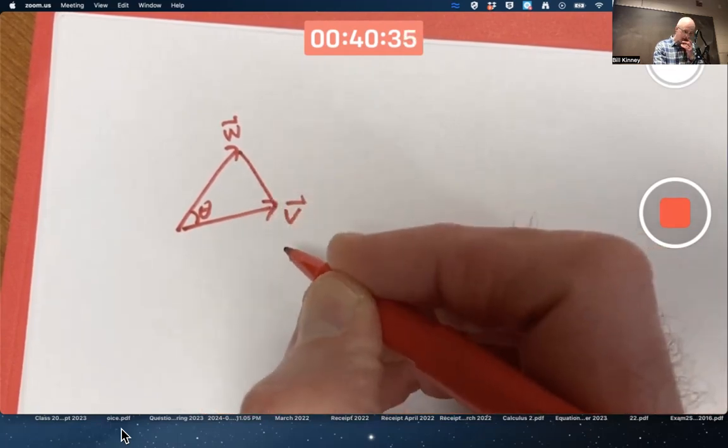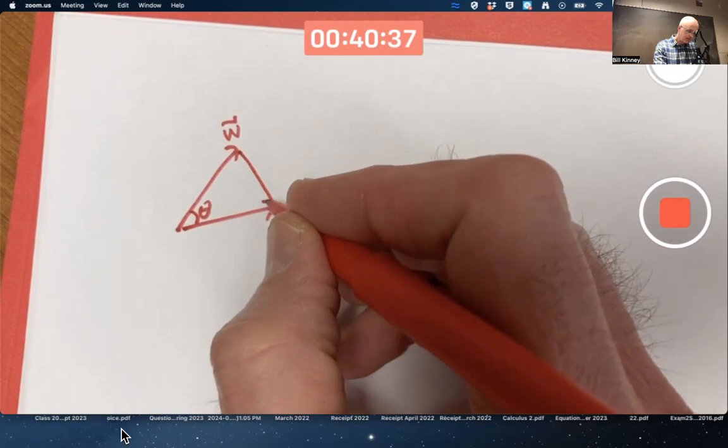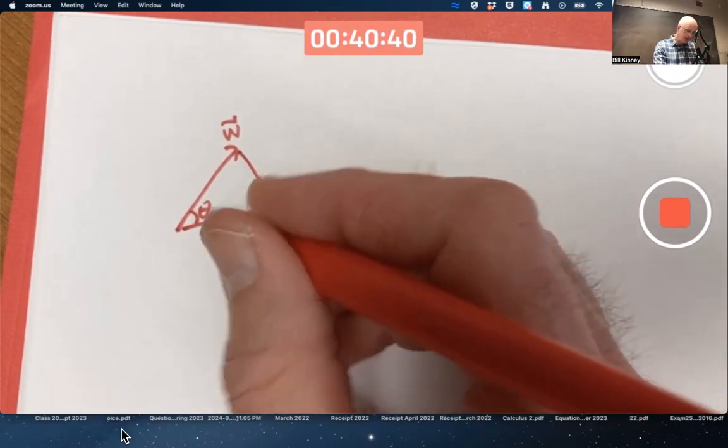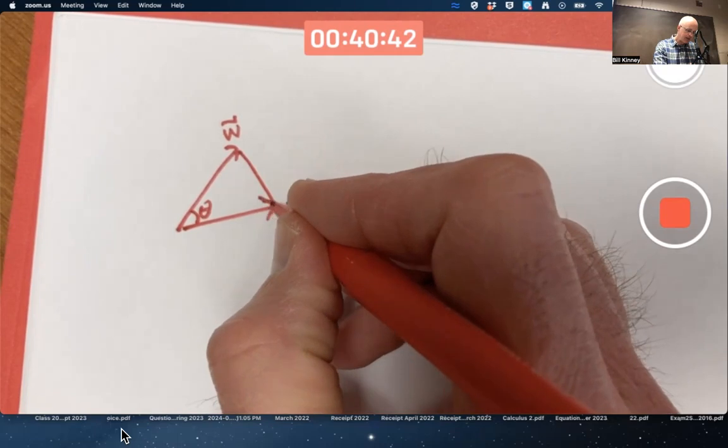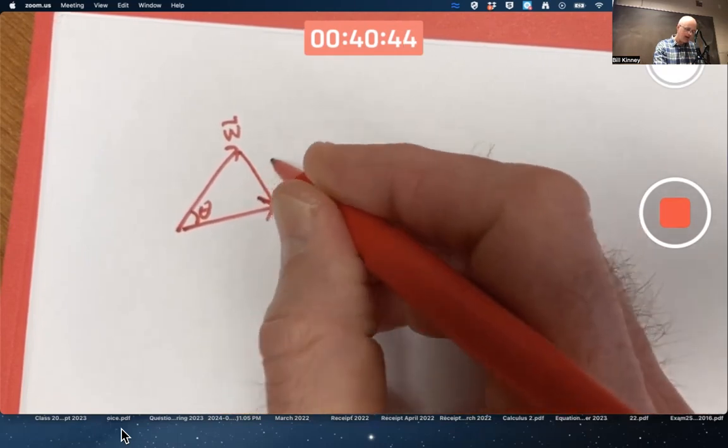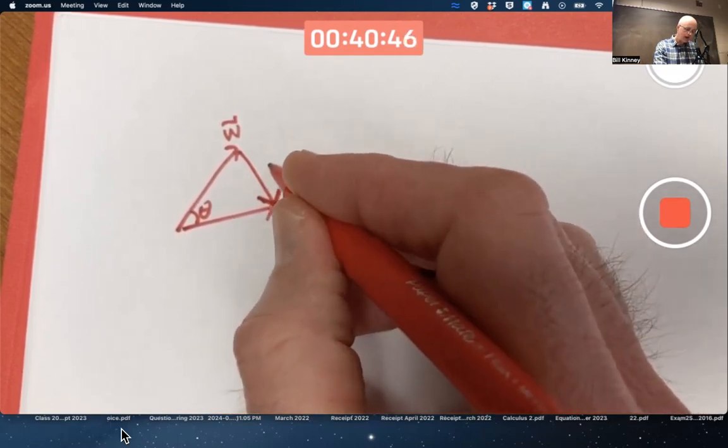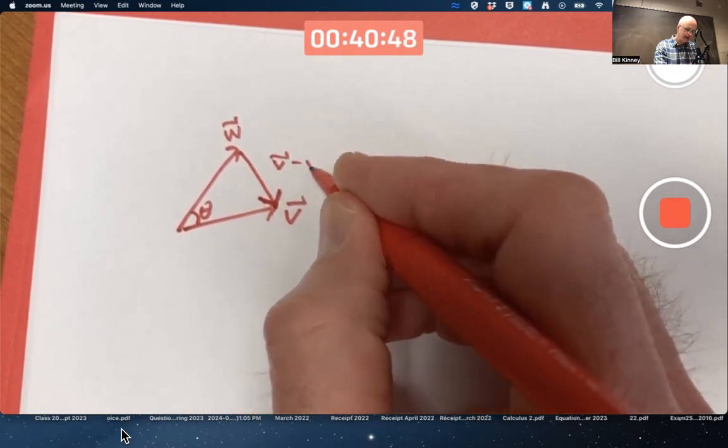It's not a right triangle in general. But if I know this is V and this is W, I can label this side as an arrow. And in fact, it would be the arrow as I've drawn it to be V minus W.